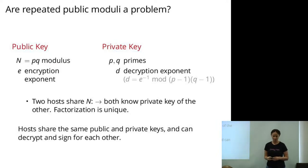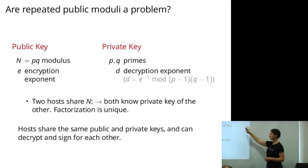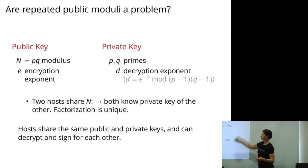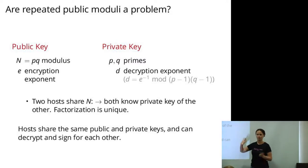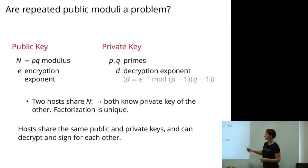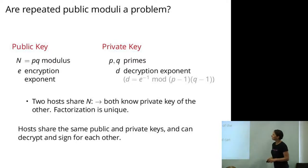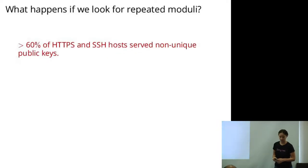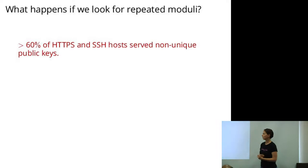Are repeated public moduli a problem? Yes. If two hosts share the same N and both have the private key, they both know the private key of the other person. Any hosts sharing the same public and private keys can decrypt and sign for each other. This should never happen, but it does. From a theoretical perspective, two people generating P and Q uniformly at random from a large space should never get a collision — but that's not what actual practice looks like.